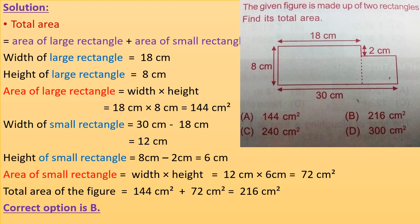See the next question: the given figure is made up of 2 rectangles — find its total area. There are 2 rectangles joined together, one large and one small. The large rectangle has a width of 18 cm and a height of 8 cm, and the total width of both rectangles is 30 cm.